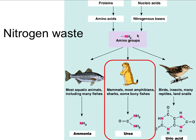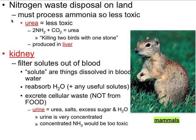Nucleic acids like DNA and RNA also get broken down into amino groups — we have to get rid of that nitrogenous waste. For us, we deal with urea, which is less toxic. We take nitrogen and combine it with carbon dioxide to make urea — this happens in the liver. We're essentially killing two birds with one stone, since both CO2 and amino groups can be toxic.